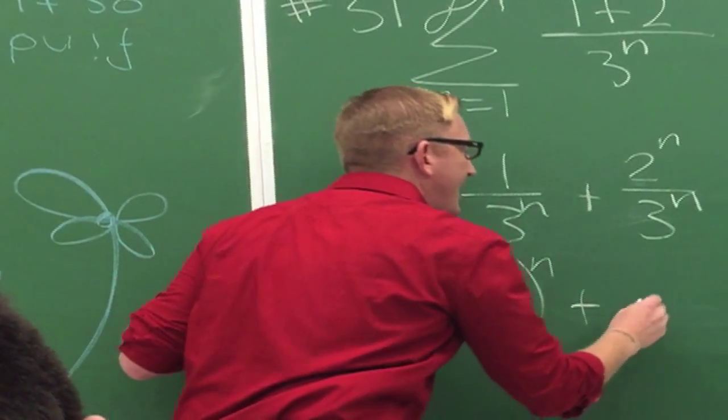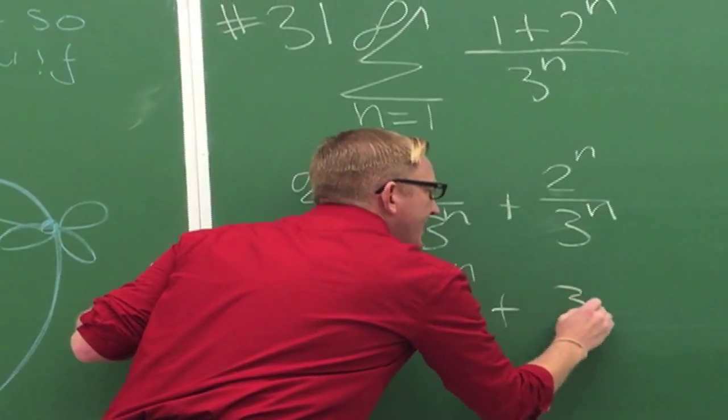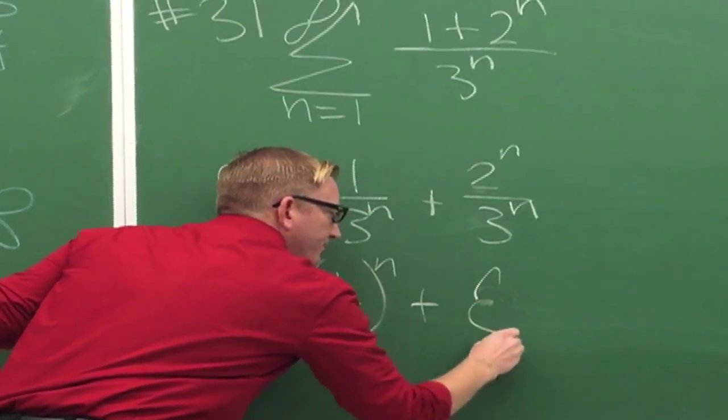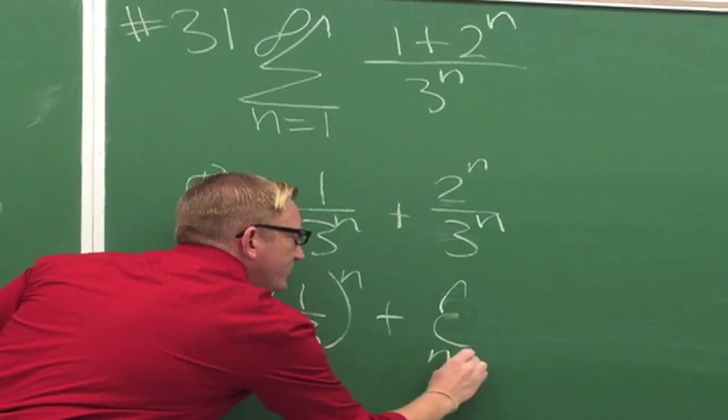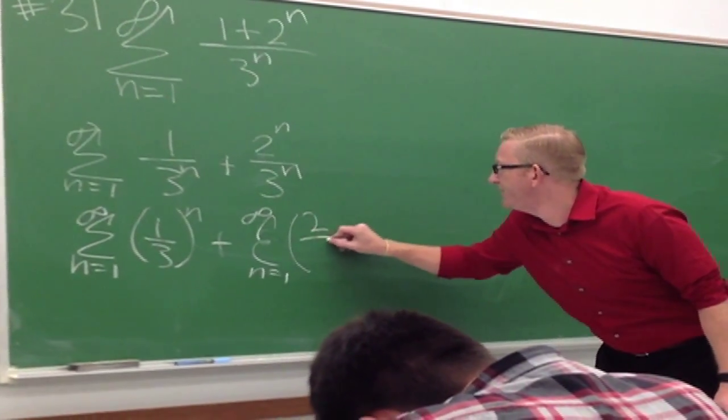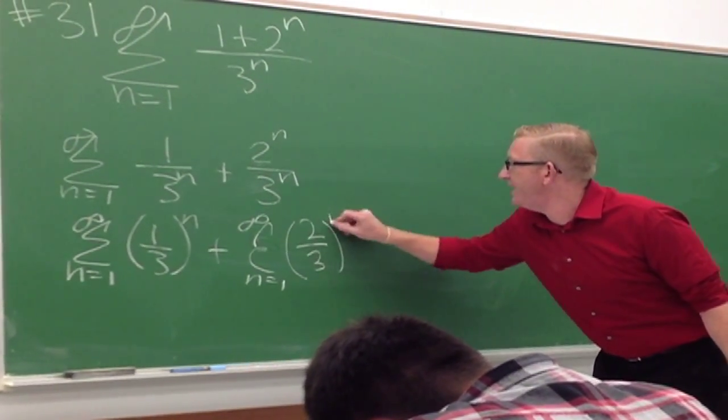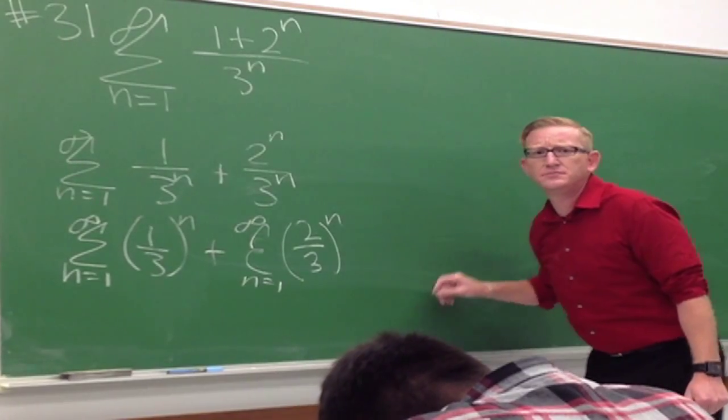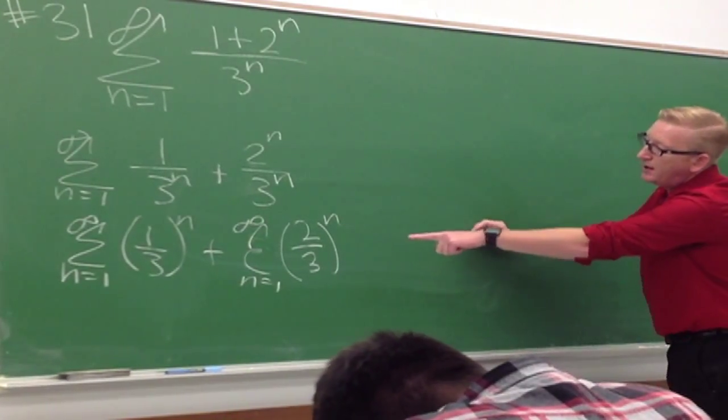So then I'm going to go ahead and I'm going to add that. Two, same trick. This is the sum n equals one to infinity of two divided by three to the n. That's okay? Okay. All right.